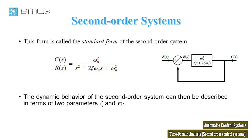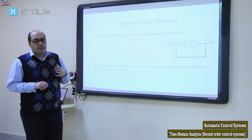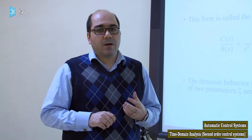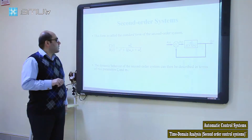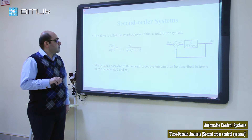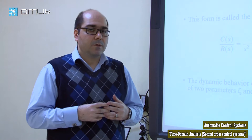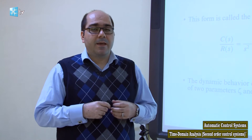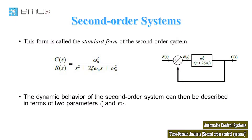As you see here, this is a typical and standard form of a second-order system, which is obtained from a closed-loop system. This term is the transfer function of the second-order system. To analyze the second-order system, we need to describe the location of the poles — the roots of the denominator polynomial of the transfer function. By finding the pole locations, we can describe the behavior of such systems.